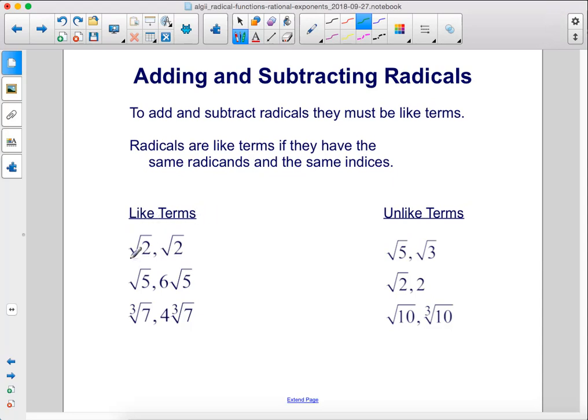So like terms would be the square root of 2 and the square root of 2. The square root of 5 and 6 times the square root of 5. So you could add these together and that would be 7. If you added these together that would be 7 square roots of 5.